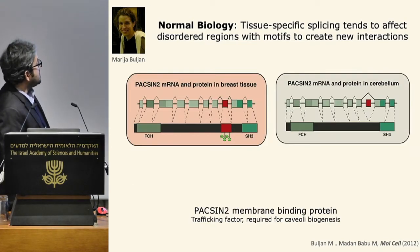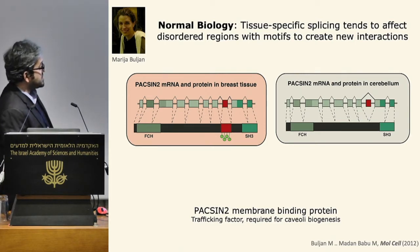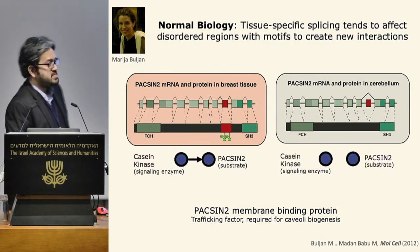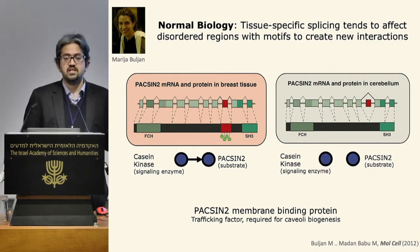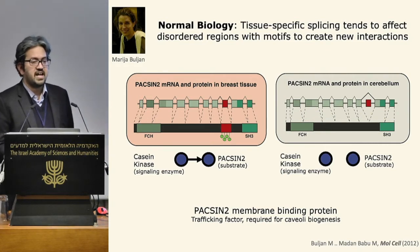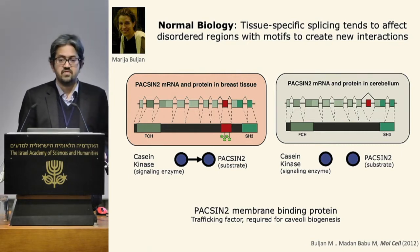Another example: Paxin-2 has an isoform expressed in breast tissue that encodes an unstructured region with multiple phosphorylation sites for protein kinase A, but the brain isoform does not include this segment. This means the same kinase can recruit this protein as a substrate in one tissue but not the other. Alternative splicing can rewire phosphorylation networks in a tissue-specific manner by specifically including or excluding short unstructured regions containing phosphorylation motifs.